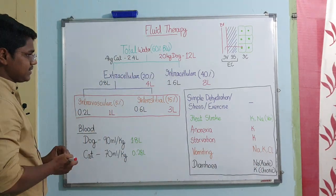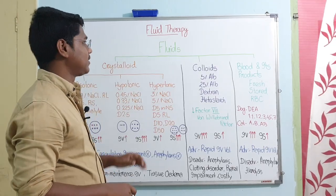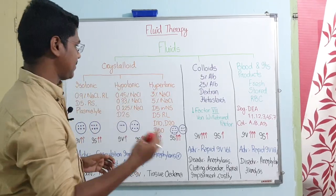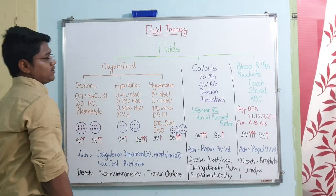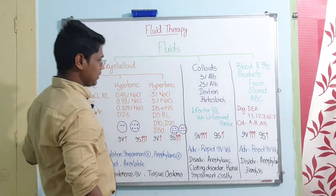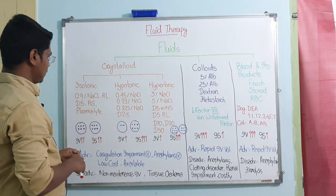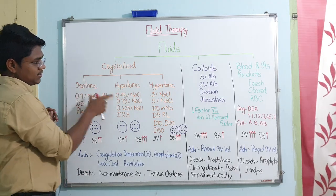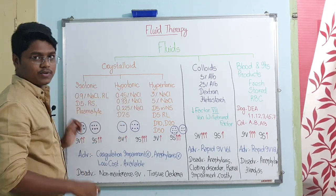Now we will understand fluids - different types of fluids. Mostly you will find crystalloid solutions, colloid solutions, or blood and its products. First, crystalloid solutions. Crystalloids can be of isotonic, hypotonic, or hypertonic nature, depending on solute concentration.